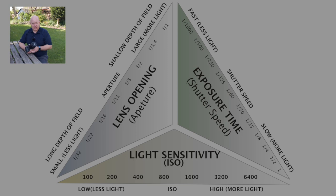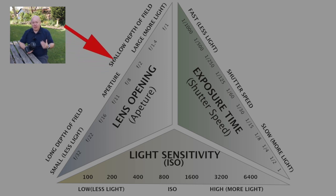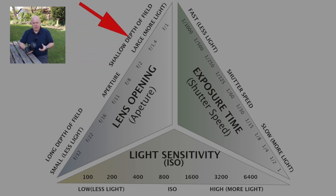Where we normally start is with the aperture. We set the aperture for the depth of field that we really want. If you're shooting in low light, then you're probably going to have a wide aperture and you'll live with the fact that you're going to have a shallow depth of field, because otherwise you'd need additional lighting or slow shutter speeds — which might be okay for what you're doing.